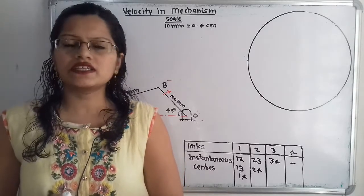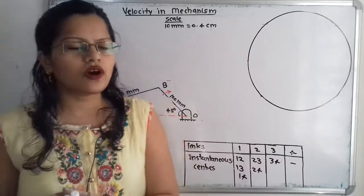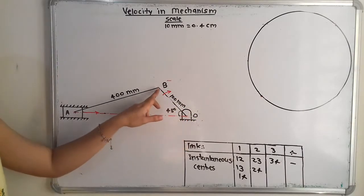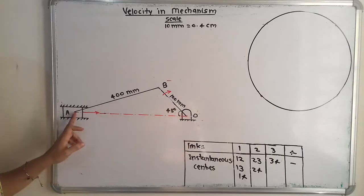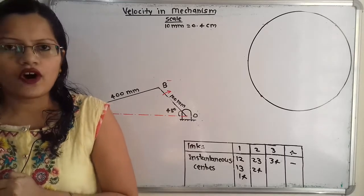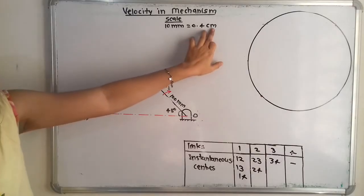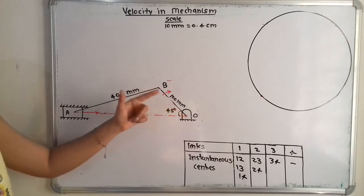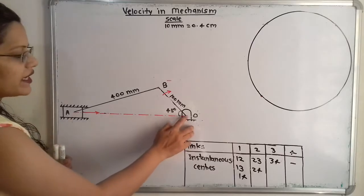We will first plot the instantaneous centers, so we have to first identify how many links are there in the given mechanism. Here the crank OB is rotating in the clockwise direction about fixed center O, connecting rod AB is there, and slider A is reciprocating along a fixed line through O. We will take a scale where 10 millimeter equals 0.4 centimeter, so 100 millimeter equals 4 centimeter and 400 millimeter equals 16 centimeter.